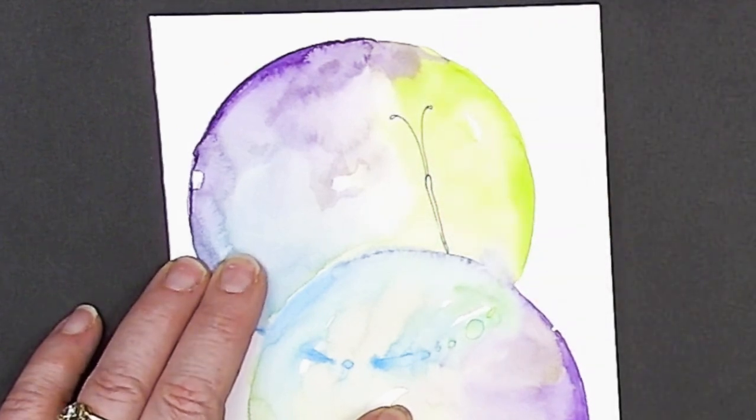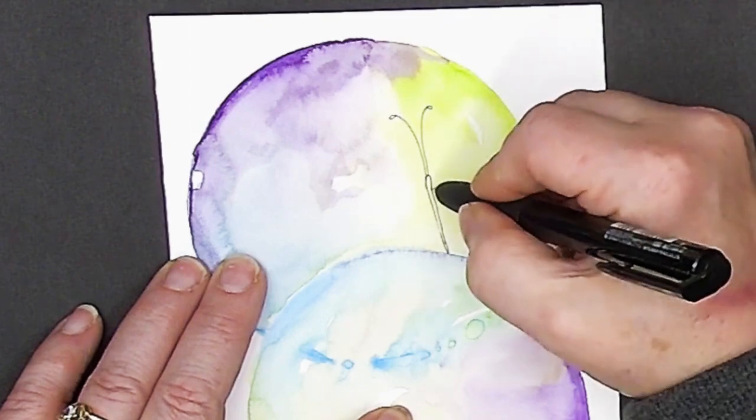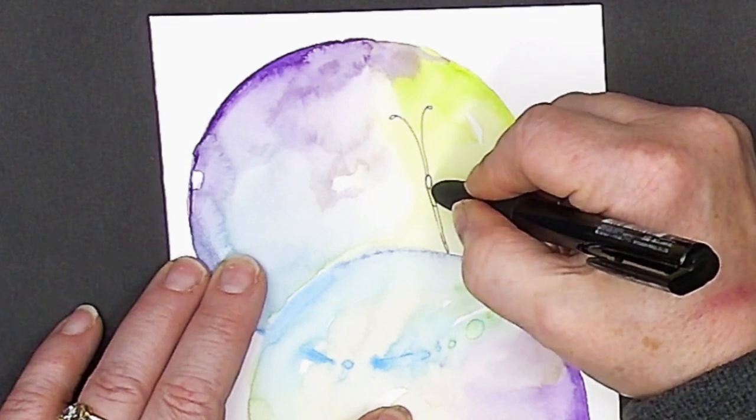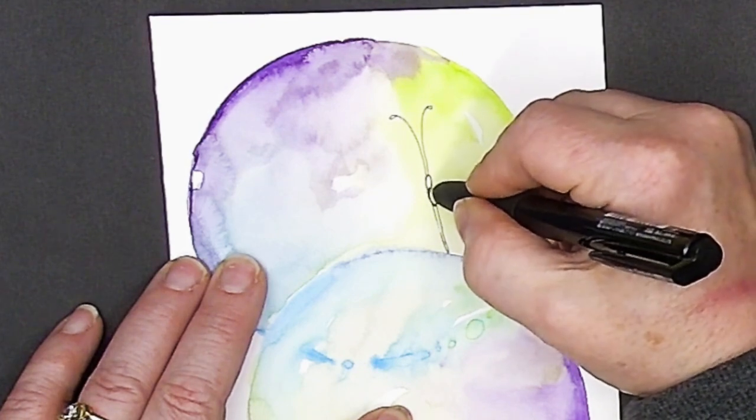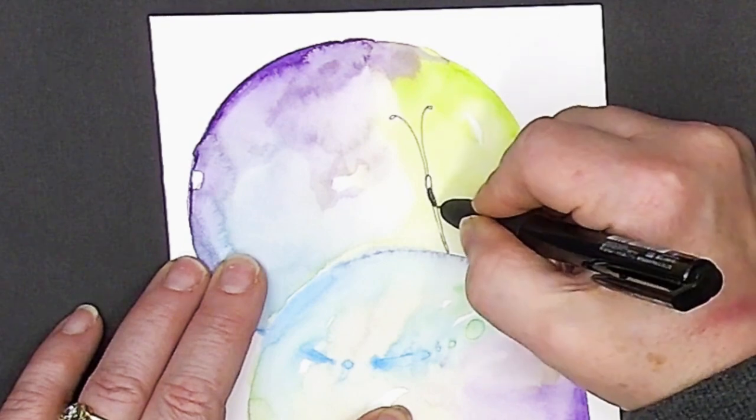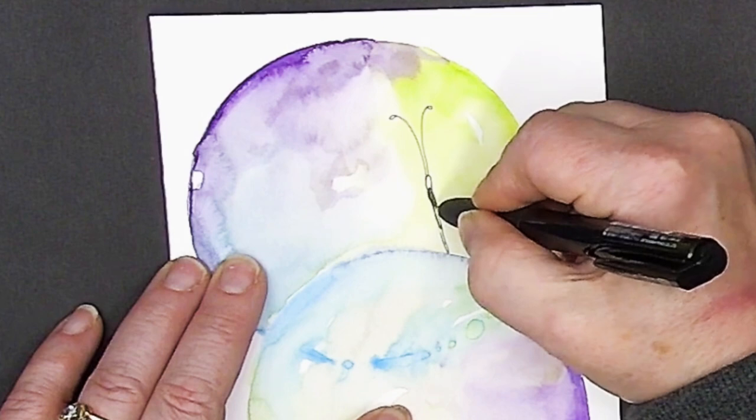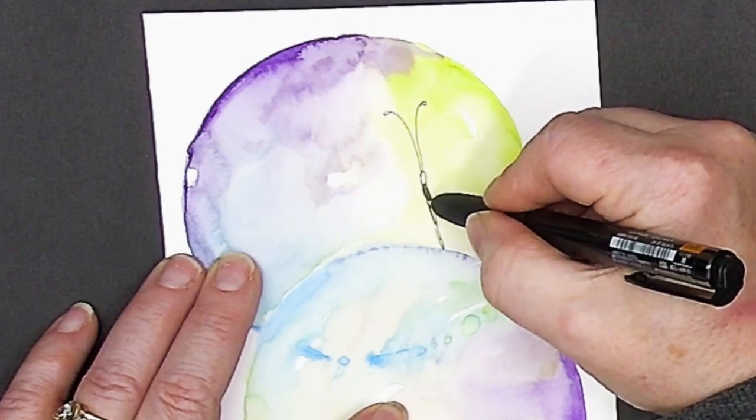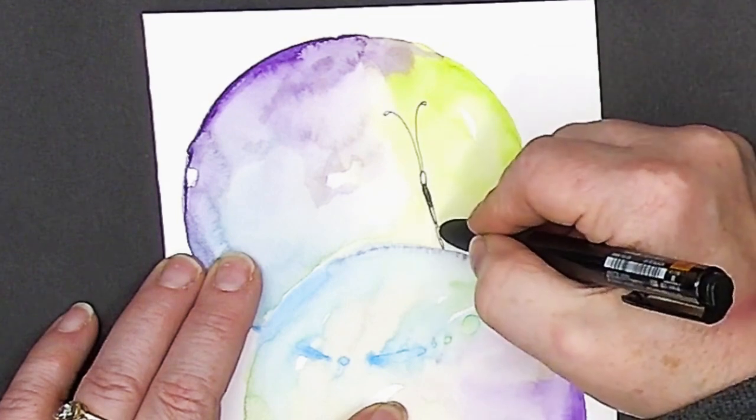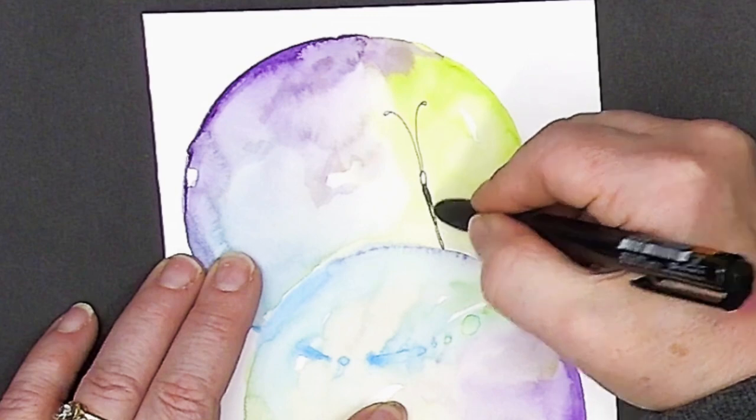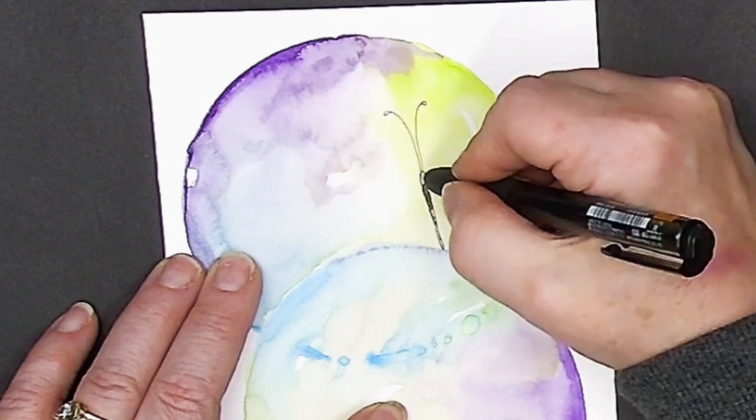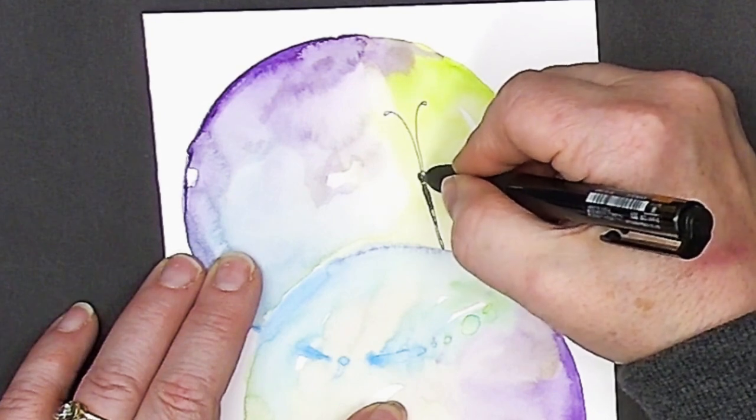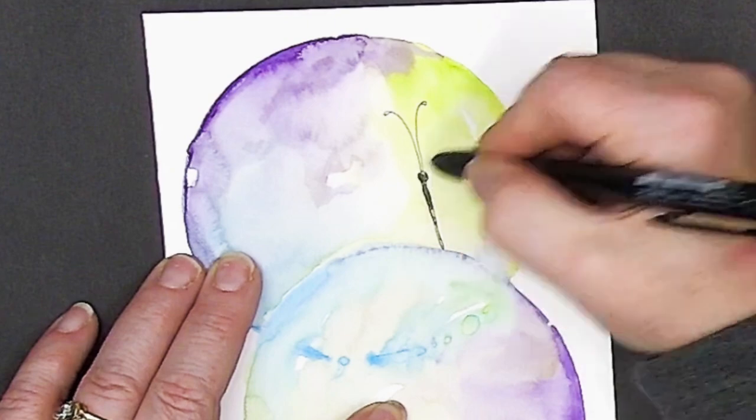And you could absolutely do this with pencil first. I'm going to segment the body just a little bit because the wings are going to come out of everything, is going to come out of this top third section. See how there's the bottom third and then that middle third there. But the top third up here is where I'm going to have the wings come out of. I'm just coloring this in black.